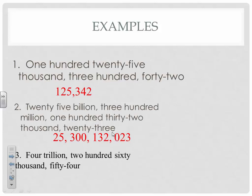The last one — try this one. It says four trillion, two hundred sixty thousand, fifty-four. Hit pause and try that. Okay, here's four trillion. Notice that there's no billions, no millions — there was nothing in the question saying that. Two hundred sixty thousand, fifty-four. Fix those if you need to. All right, those were whole number digits up to the trillions.